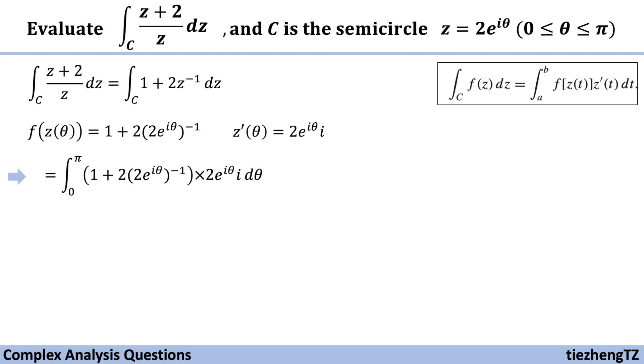So the next step is just to substitute. So our equation becomes integral 0 to pi, and then just substitute f(z(theta)) times z'(theta) d theta. And now let's organize our equation. It becomes integral from 0 to pi, 2i times e to the power of i theta, plus 2i d theta.